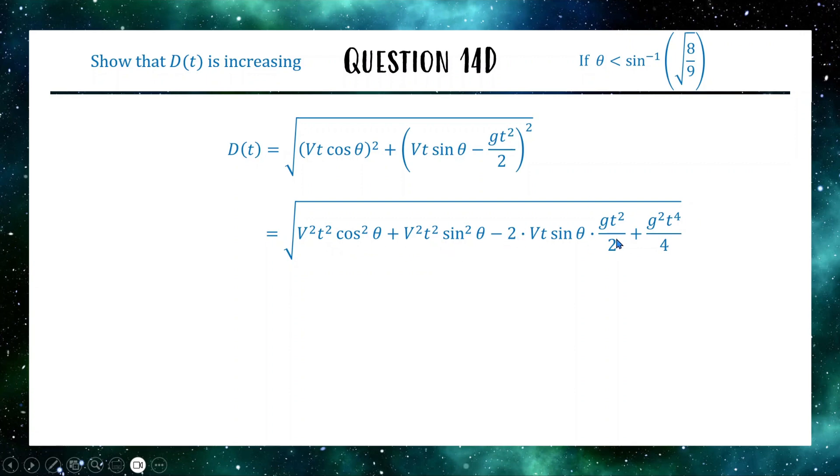What we can do to simplify a little bit is we can group together. Here we have a V squared T squared with a cos squared and a sine squared. So we can factor out the V squared T squared because we know that cos squared plus sine squared is equal to one. This two and this divided by two can cancel each other out. So we have V squared T squared times one, and we have VG T cubed sine theta plus G squared T to the four over four.